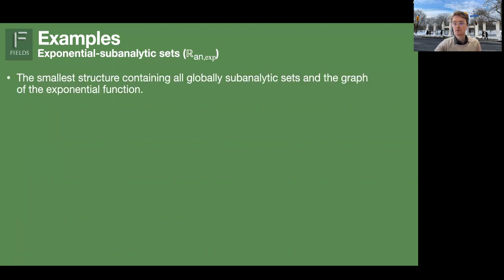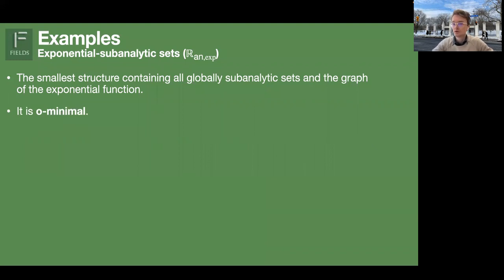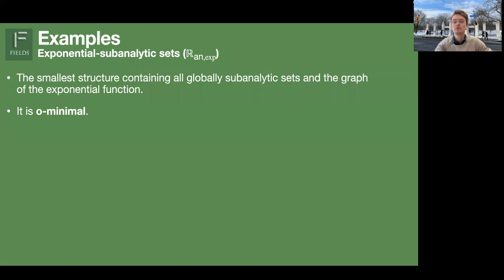Something special is going on here: you can merge the globally sub-analytic sets and the exponential algebraic sets together and still get an O-minimal structure. This is not easy to show, because if you take more and more sets, it could violate the minimality axiom — it could produce infinitely many new definable subsets of R. We are always trying to look for larger structures while keeping the amount of definable sets in R very low, so you can expect it's not easy to just make it larger.